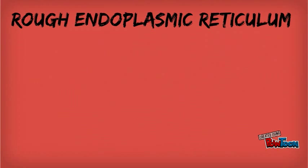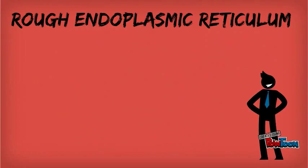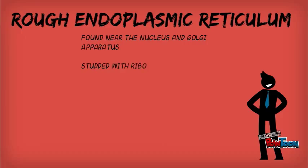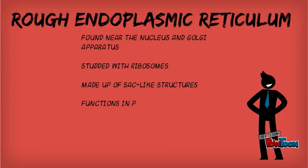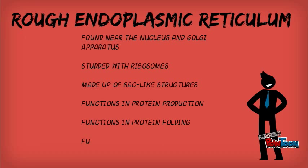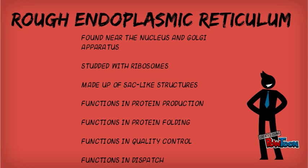In summary, the rough endoplasmic reticulum is a structure found mainly near the nucleus and Golgi apparatus. It is studded with ribosomes and made up of sac-like structures held together by the cytoskeleton. Its function is protein production, protein folding, quality control, and dispatch.